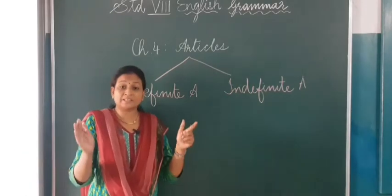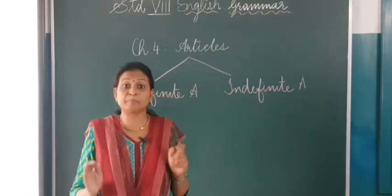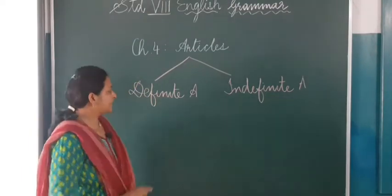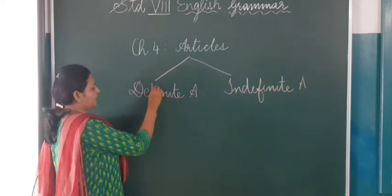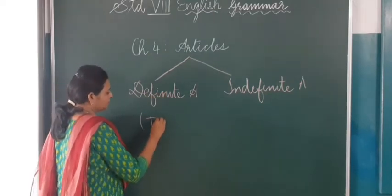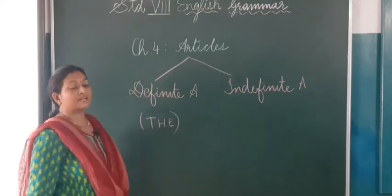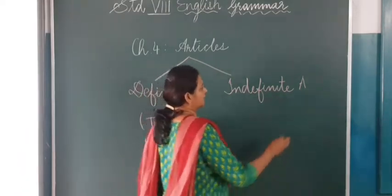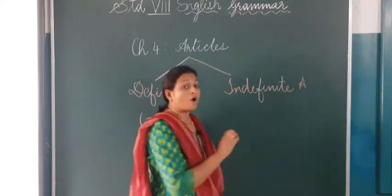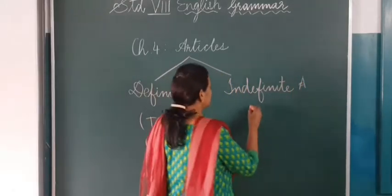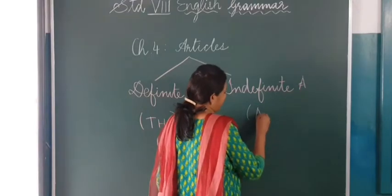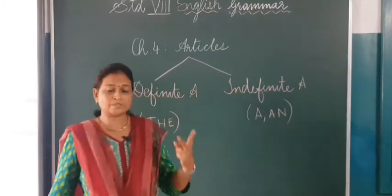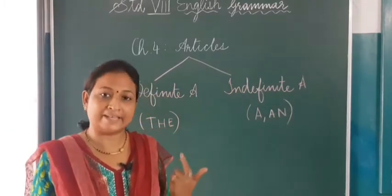What is definite? Definite means particular — one particular article. So when we are specific, we will be using the definite article, and it is 'the'. In definite article, we have only 'the'. In indefinite article — that means when we are not sure — we have two: one is 'a', and the other is 'an'. So two types of articles: definite and indefinite.